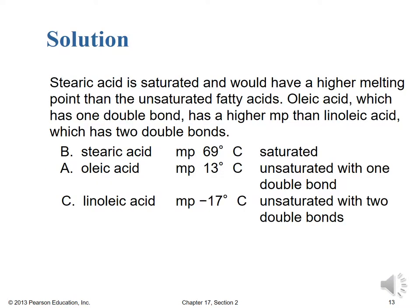Since all three are 18-carbon fatty acids: stearic acid is saturated and is your highest melter at 69°C. Oleic acid is monounsaturated — we'd expect a melting point just below room temperature — giving 13°C. Linoleic acid, with two unsaturations, is the lowest melting at −17°C. The more unsaturations present, the lower the melting point, due to the kinks provided by those double bonds allowing for less significant London dispersion forces between the chains.